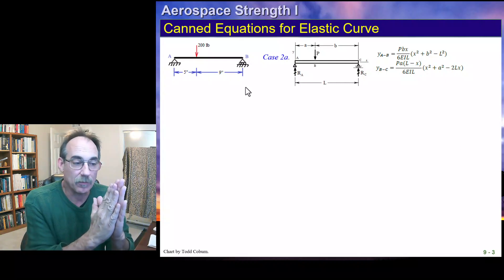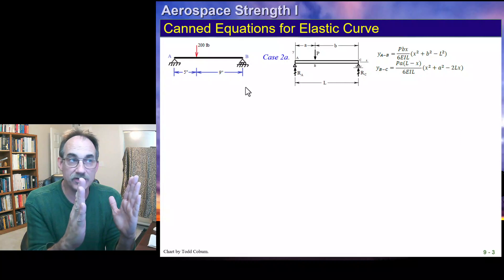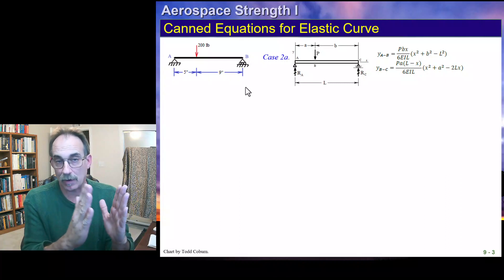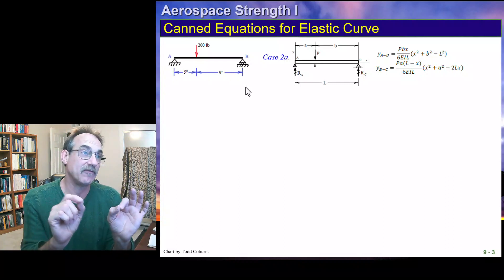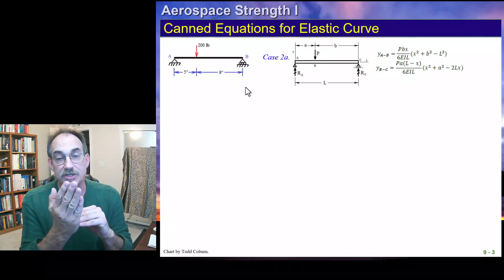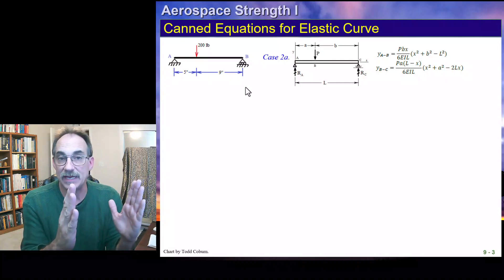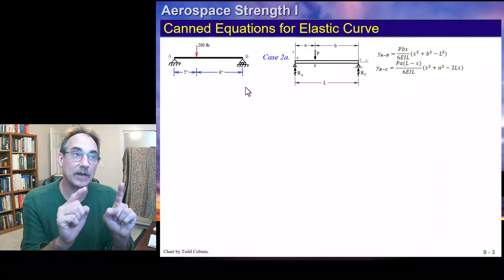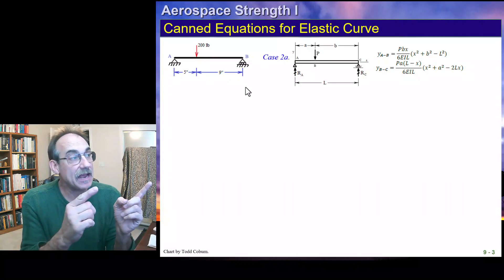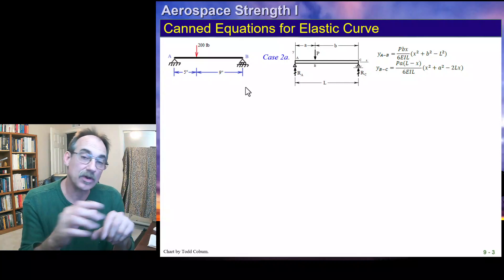In this case, we've got moving from left to right, we have that reaction at A, so that's going to define one function for the span from A to B. That point load at point B means you're going to have a new function to represent the next piece, both for moment and for deflection. Hence, we have two different functions here. For the deflection, we use the first relation if we're between A and B. We use the second relation if we're between B and C. Remember, it's critical to use the right relation.